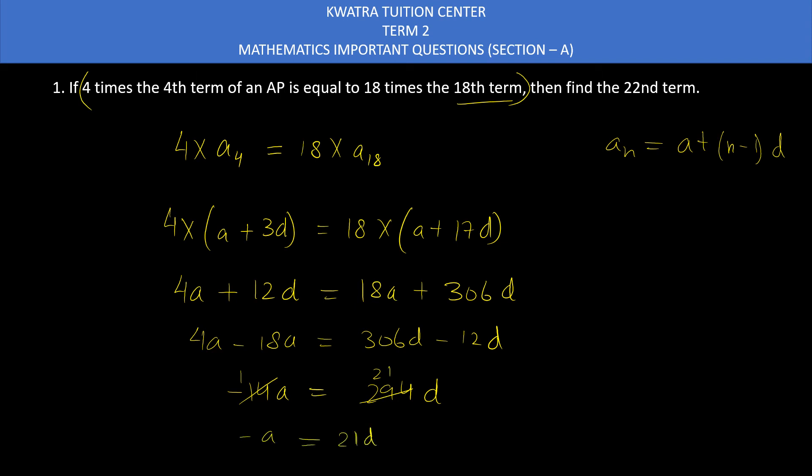Take minus A to the right side. It will give you 0 on the left side, A on the right side, 21D. So A plus 21D is basically A22. A22 is equal to A plus 21D.